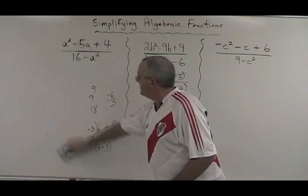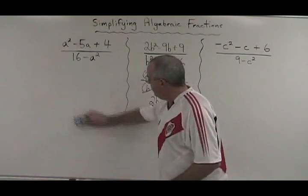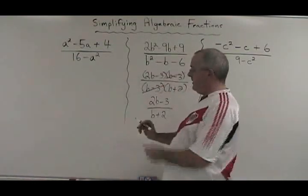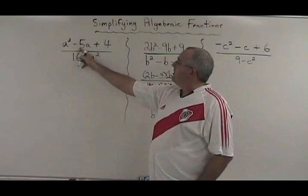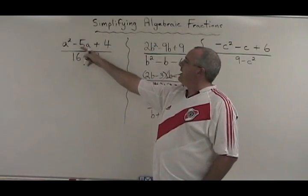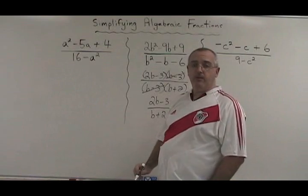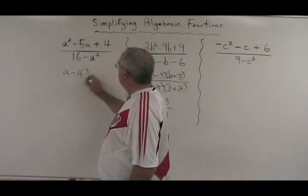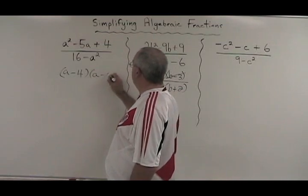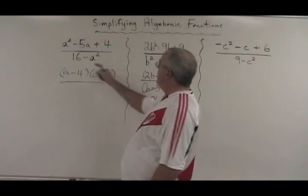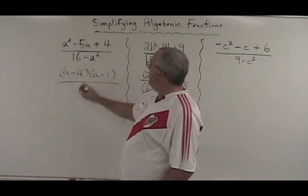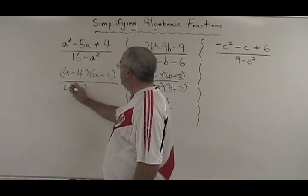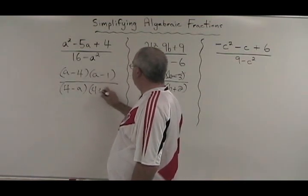Let's move on to this example over here. What two numbers multiply to give 4 and add to give negative 5? That would be negative 4 and negative 1. Our numerator is A minus 4 times A minus 1. Factoring the difference of squares in the denominator, we get 4 minus A, 4 plus A.